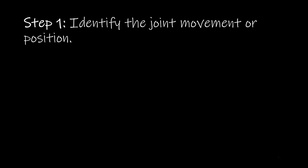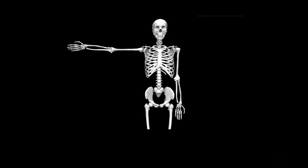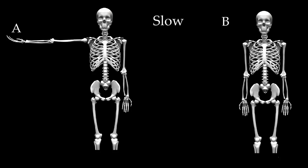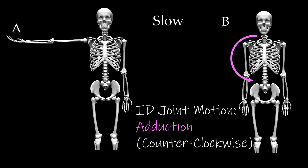Step 1 is to identify the joint movement or position. In this case, we have an example of glenohumeral adduction. We are going from A to B slowly — lowering the arm down towards the body. In terms of identifying the joint motion, we know that we have glenohumeral adduction, and the movement from our perspective is going in a counter-clockwise direction.